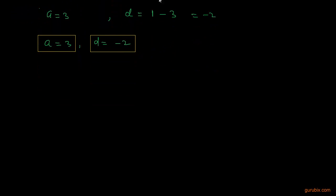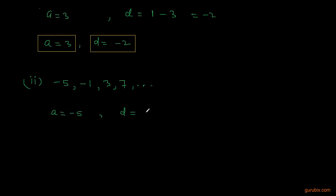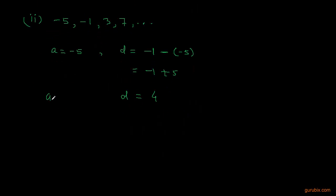Moving to the next part, the AP starts with minus 5, minus 1, 3, and 7, and some other terms. The first term is minus 5. We get the common difference by subtracting the first term from the second one. The second term is minus 1, so we get minus 1 plus 5, which gives a common difference of positive 4. So the first term is minus 5 and the common difference is 4.